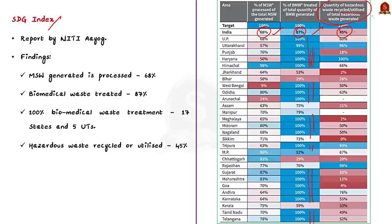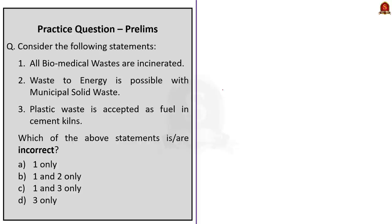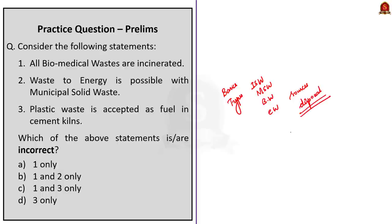That concludes this discussion. We saw the basics about solid waste, the different types — industrial solid waste, municipal solid waste, biomedical waste and electronic waste — their sources and disposal mechanisms, and the data from NVStats India 2022 and the SDG Index of Niti Aayog. Let us move on to the next article discussion.